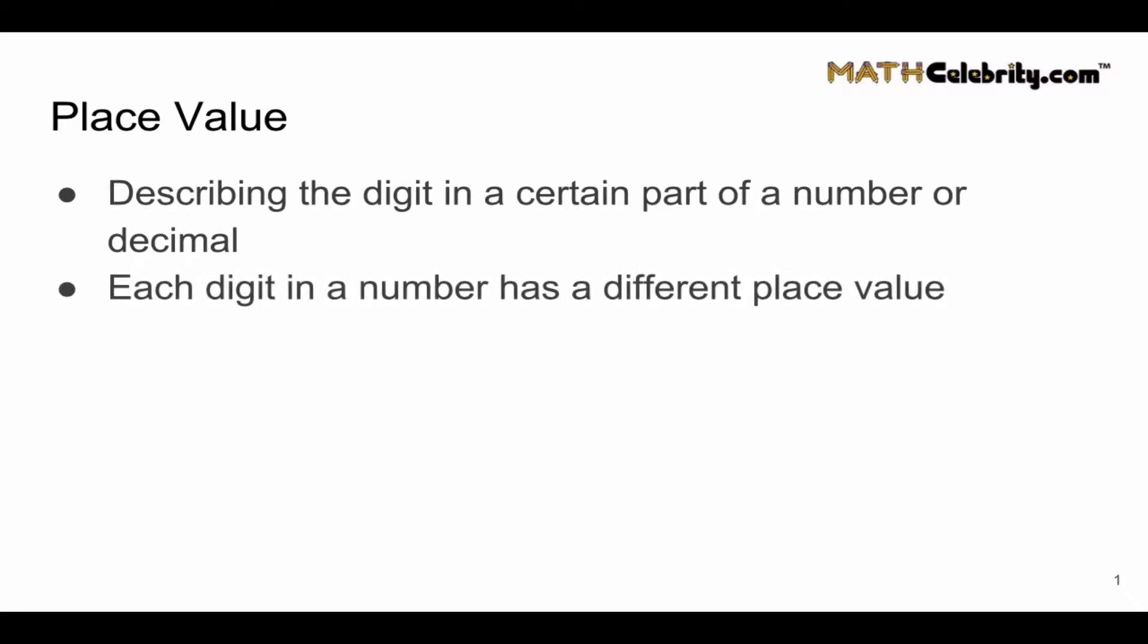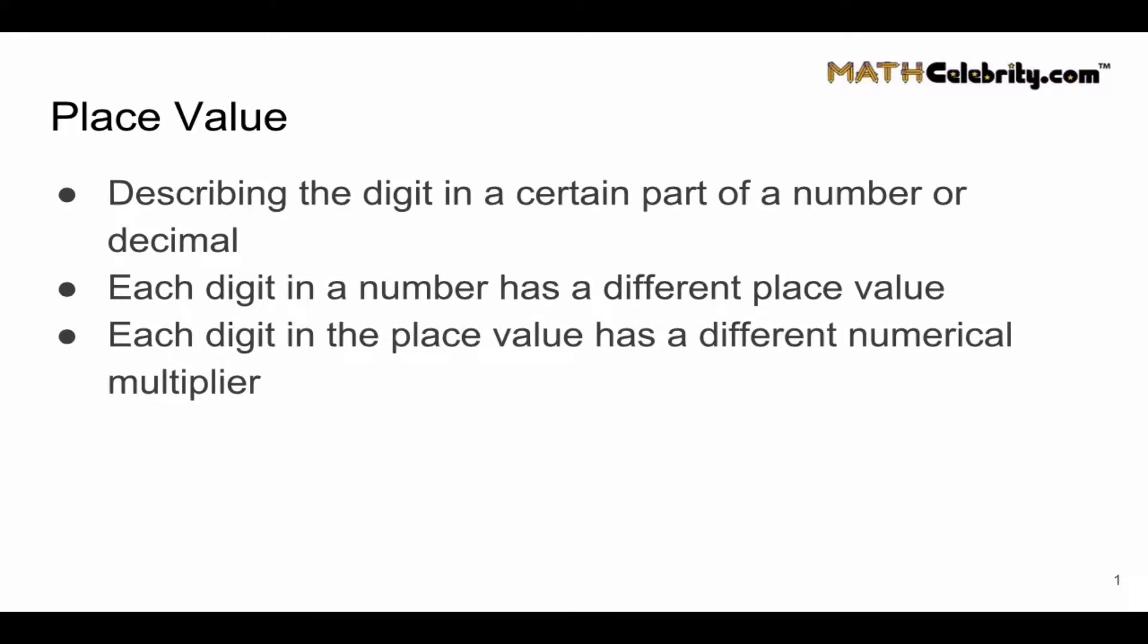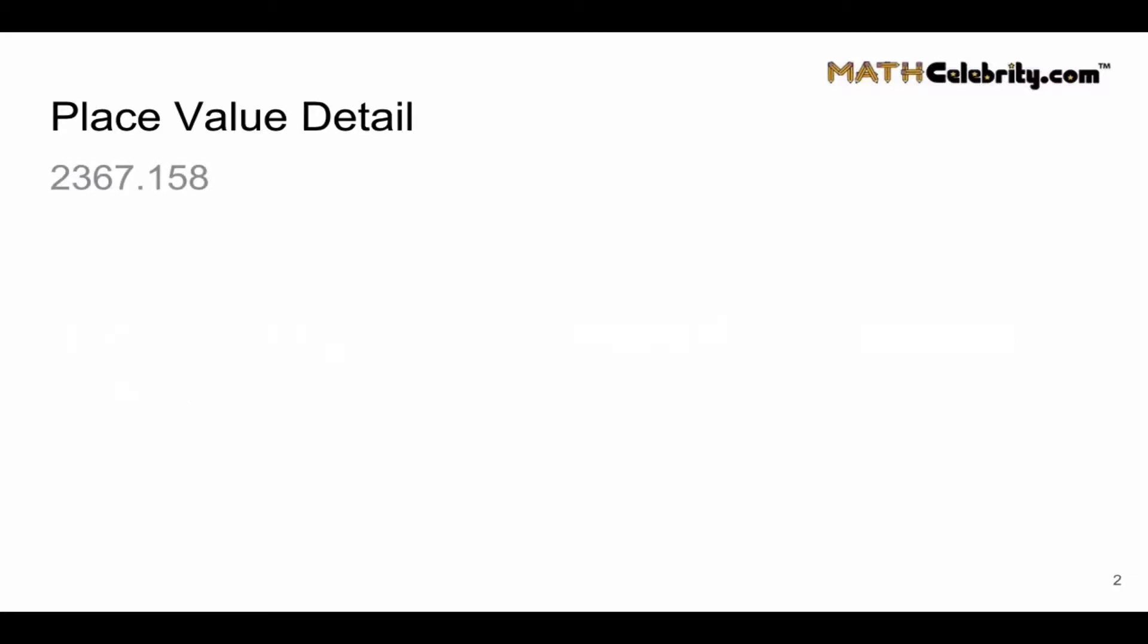And each digit in the place value also has a different numerical multiplier. Let's walk through that now. Let's take the decimal 2367.158, and we're going to walk through the place value for the seven numbers in this decimal.